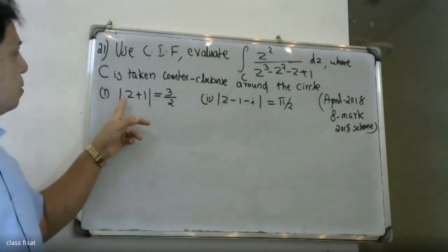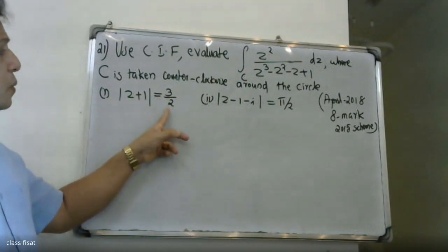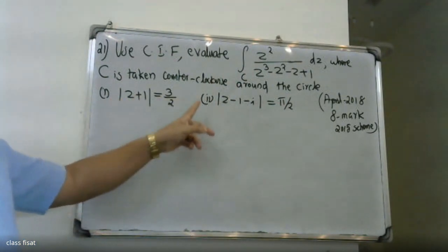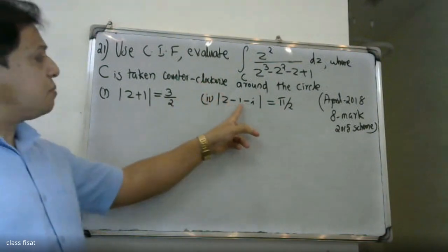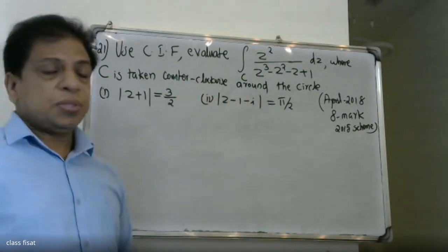First question: the modulus of z plus 1 is equal to 3 by 2. Second question: the modulus of z minus 1 minus i is equal to 5 by 8.